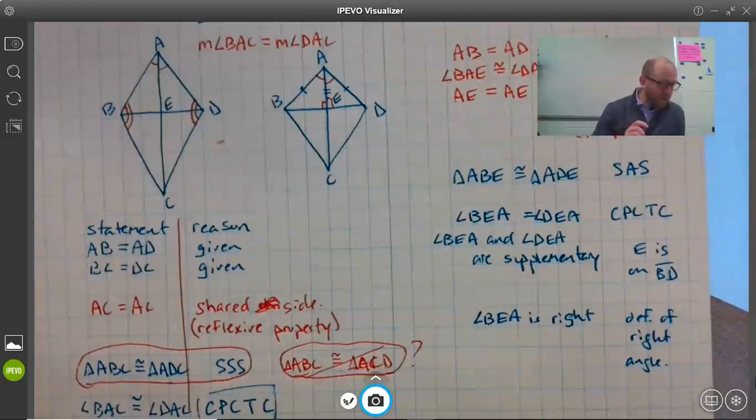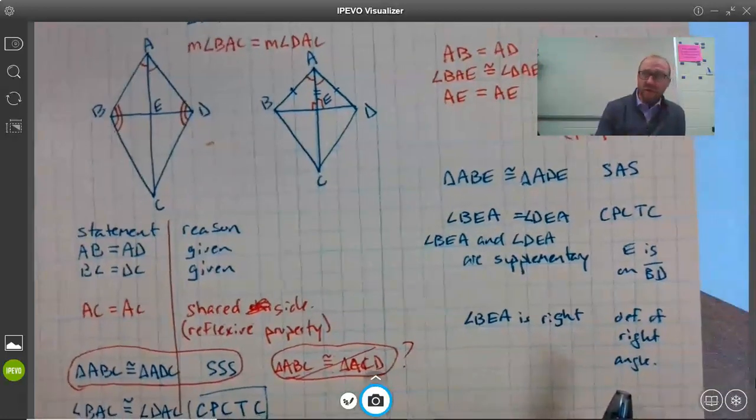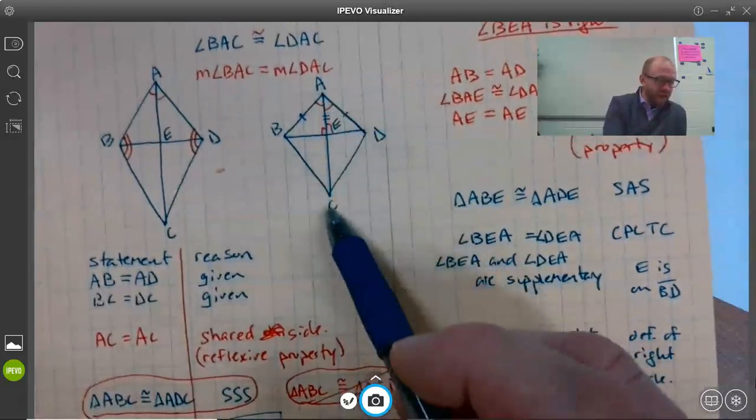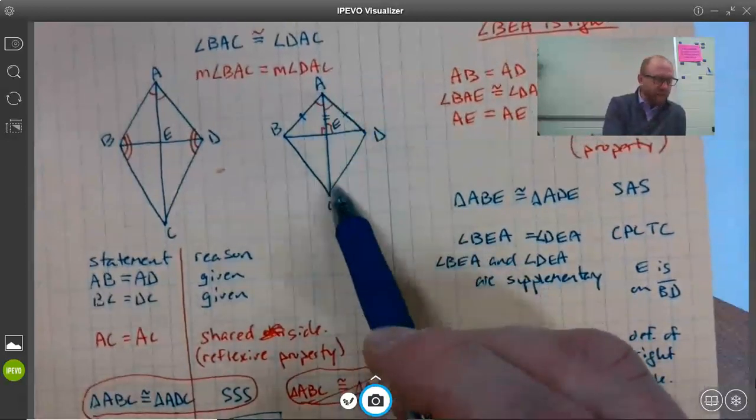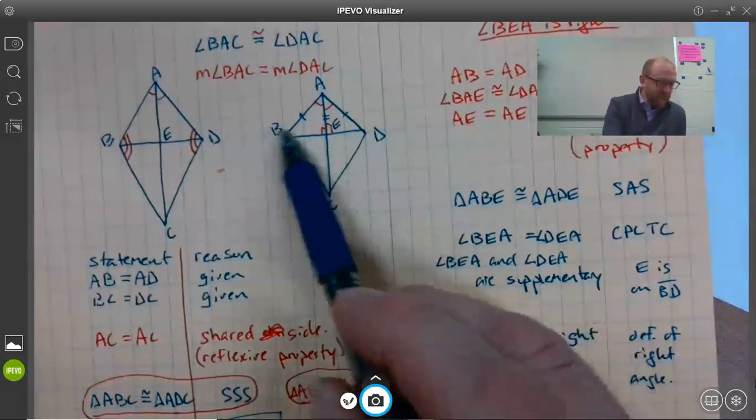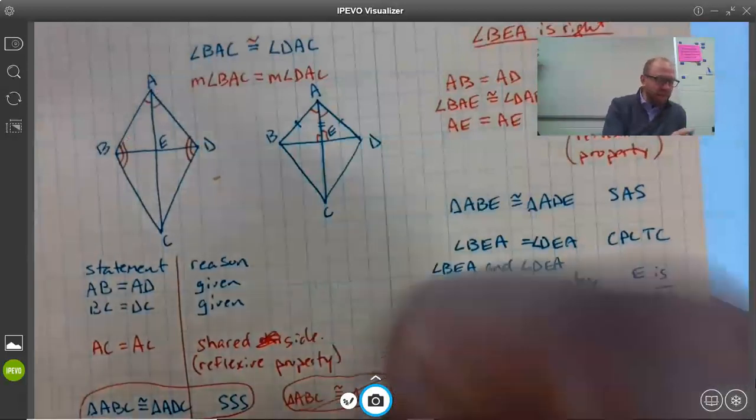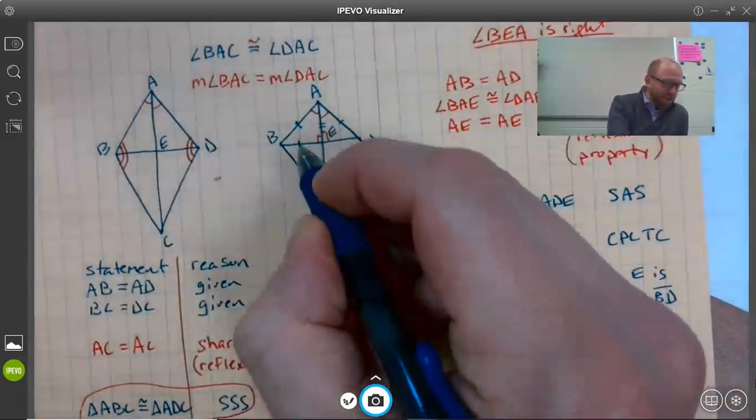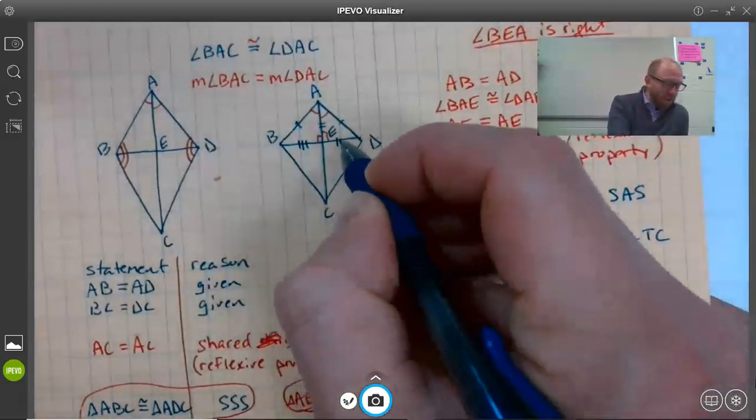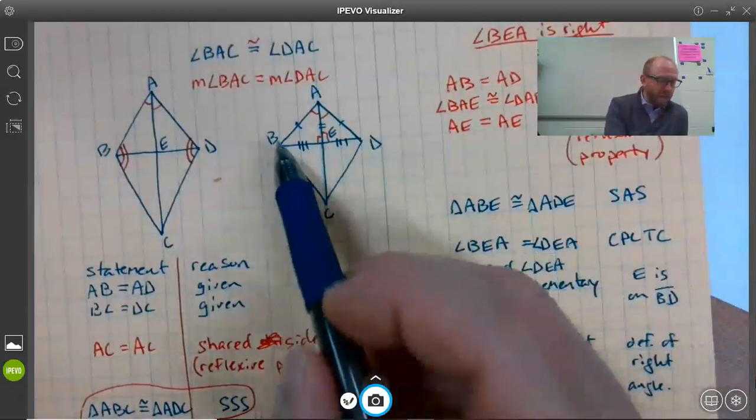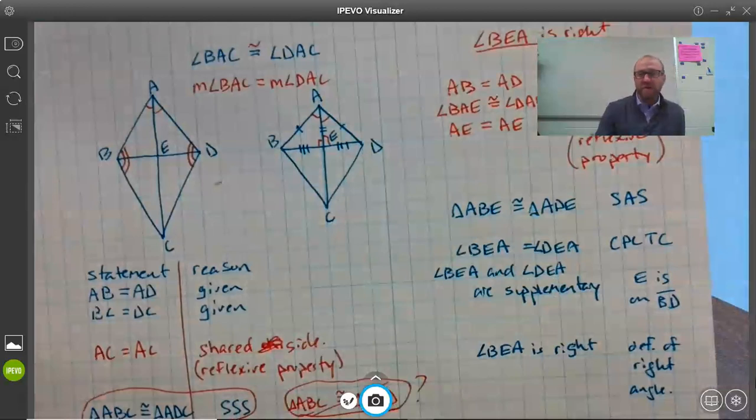All right, so your job next is to write a similar proof. You're trying to prove that segment AC bisects BD. It's going to be a similar setup. Bisects means it cuts BD into two equal size pieces, so you're basically trying to prove that ED and EB are the same length. It's going to be a very similar setup to what you see here.